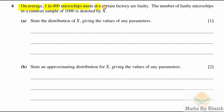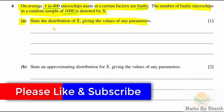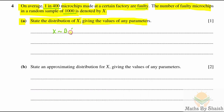Question 4: 1 in 400 microchips made at a certain factory are faulty. The number of faulty microchips in a random sample of 1000 is denoted by X. Part (a): state the distribution of X giving the values of any parameters. The number of trials is fixed, and each trial has two fixed outcomes — either faulty or not faulty — so the distribution is Binomial with n=1000 and p=1/400.